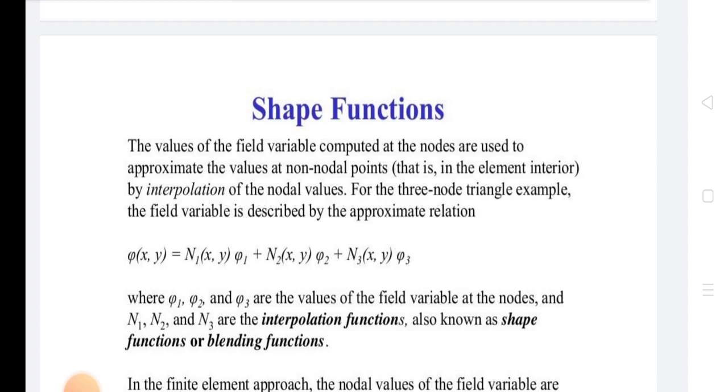For the three-node triangle example, the field variable is described by the approximate relation: phi(x,y) = N1(x,y)φ1 + N2(x,y)φ2 + N3(x,y)φ3.